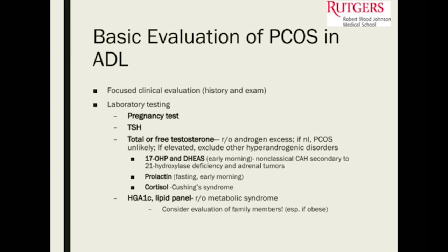When evaluating a girl you're thinking may have anovulatory cycles possibly related to PCOS, do a pregnancy test and check TSH since thyroid abnormalities can cause cycle irregularities. Check testosterone levels — total or free. PCOS patients tend to have elevated testosterone. Also consider 17-OHP and DHEAS to rule out non-classical congenital adrenal hyperplasia secondary to 21-hydroxylase deficiency, and to think about adrenal tumors secreting DHEA.